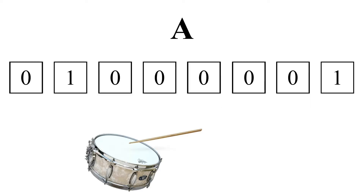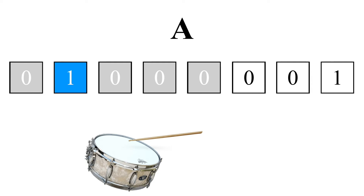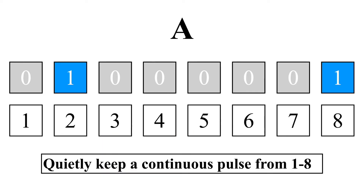Let's listen to that again: 0, 1, 0, 0, 0, 0, 0, 1. Let's add a steady pulse that will play quietly in the background. Here is the sound of the pulse: 1, 2, 3, 4, 5, 6, 7, 8.